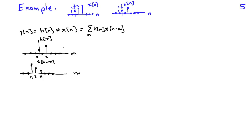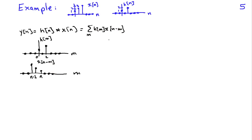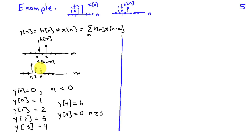For the ordinary linear convolution, h convolved with x equals the sum of h of m times x of n minus m. Graphically, I fix h of m and flip and shift x so that what was at time 0 in x now occurs at time n. For n less than 0, the two signals don't overlap, so y equals 0. When n equals 0, the value 1 overlaps with 1, giving 1 times 1 equals 1. When n equals 1, x value 2 overlaps with h value 1, giving 2.